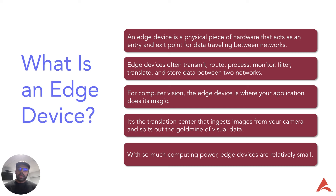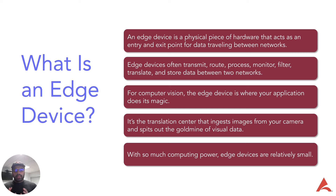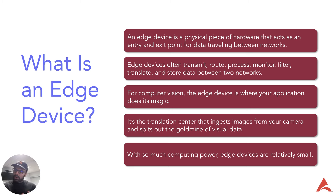It's a translation center that ingests images from your camera and outputs a gold mine of visual data. With so much computing power, edge devices are relatively small. Edge devices are essentially computers or machines that are physically present at the edge — meaning the physical location where the application runs. For example, a computer vision application running in a restaurant, where all streams from inside the restaurant are processed by a device present within the restaurant, would be considered at the edge.